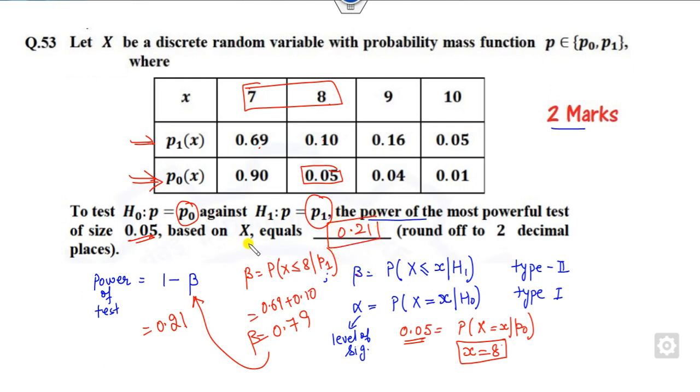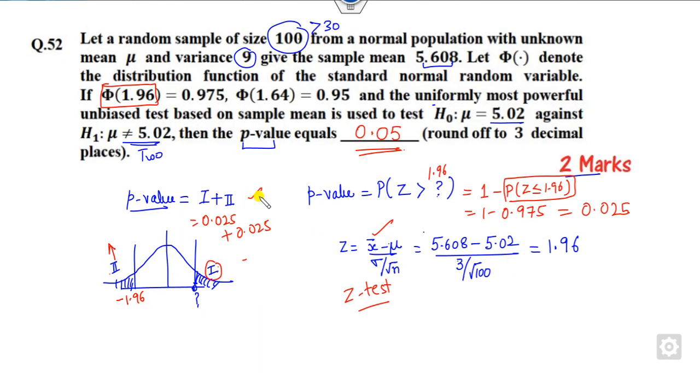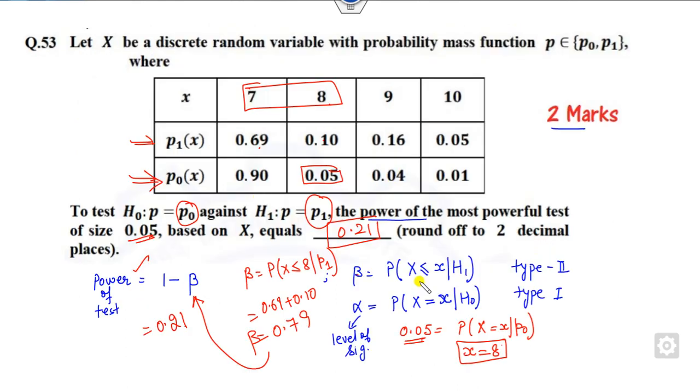So this is the way you can solve, you can compute the power of the test and the p-value of the respective test. Whatever the test is there, you can simplify that. So make sure that you have to use the type 1 and the type 2 by using these two formulas.